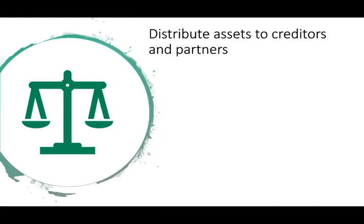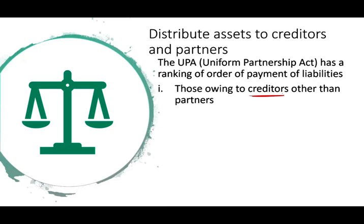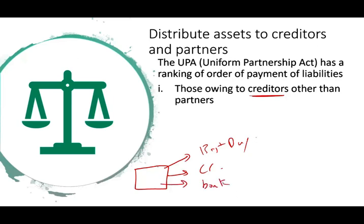How do we distribute assets to creditors? We follow the Uniform Partnership Act, UPA. First, we pay those owing to creditors other than partners — outside creditors like suppliers and banks. The partnership may also have partners as creditors. So first, we pay the outside creditors. If you are a partner, you have to wait until the outsiders are paid. This makes sense because the outside creditors have priority over partner-creditors.